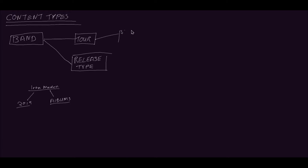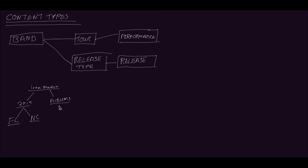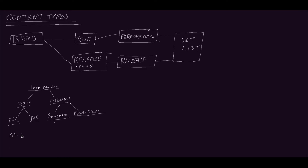We now create a performance content type, which allows users to create a performance that is a child of a specific tour. And a release content type that allows us to create a child of a specific type of release. For example, we can create a performance for Florida and North Carolina for 2019, and the Senjutsu and the Power Slave albums. Next, we'll create a content type to represent the lists of songs or a set list. As both releases and performances have lists of songs which are pretty much the same apart from their label, we will create a single content type to be used for both — allowing us to create a set list and an encore list for Florida and North Carolina performances, and lists of songs for disc one and disc two for Power Slave and Senjutsu.